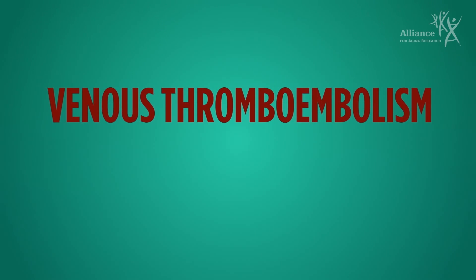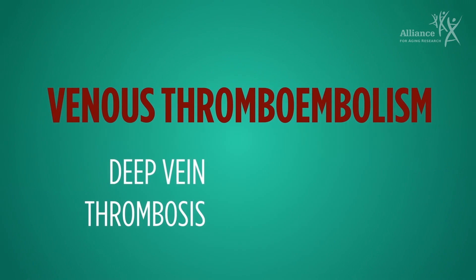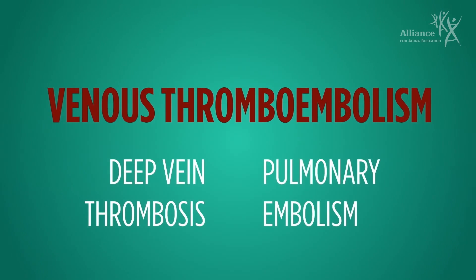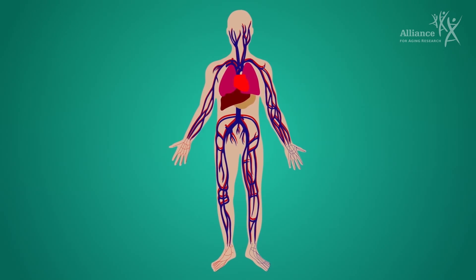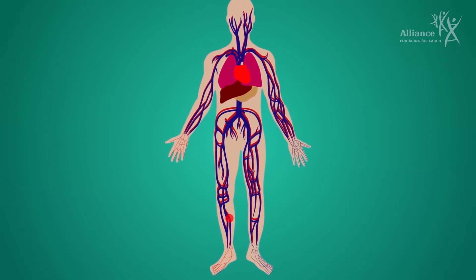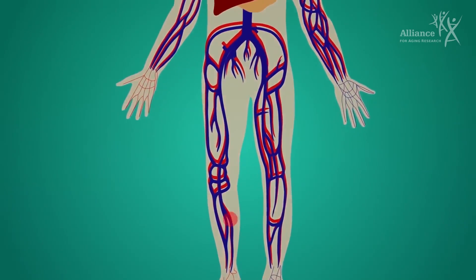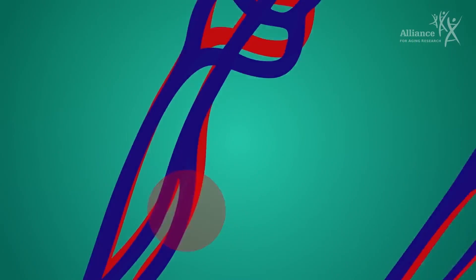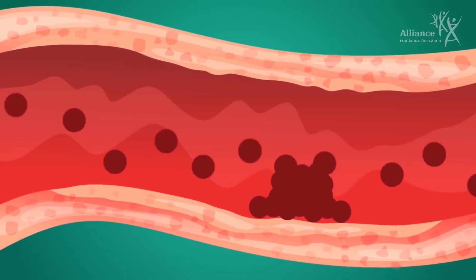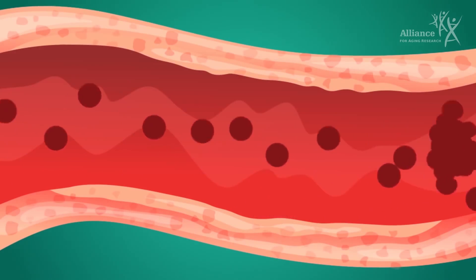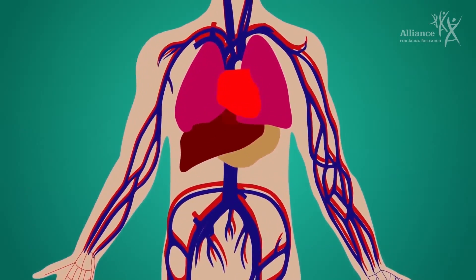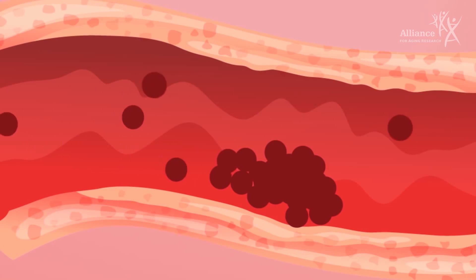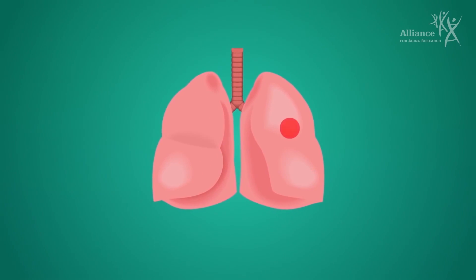Venous thromboembolism, or VTE, is a term that includes deep vein thrombosis and pulmonary embolism. Deep vein thrombosis, or DVT, occurs when a blood clot develops in a deep vein in the body. The most common place for this kind of clot to develop is the veins of the legs or pelvis, but clots can also develop in the arms, brain, or intestines. Not all DVTs break free, but if they do, it can be life-threatening. This is because the clot can travel through the circulatory system to the lungs and lodge in a main lung artery, blocking blood flow and causing severe strain on the heart. This is called a pulmonary embolism, or PE.